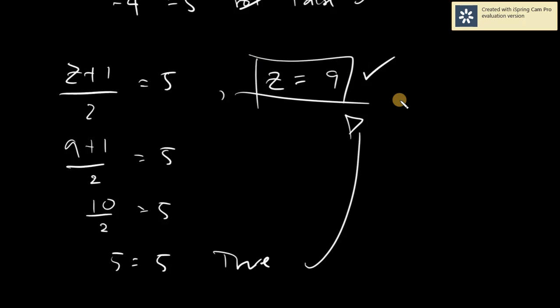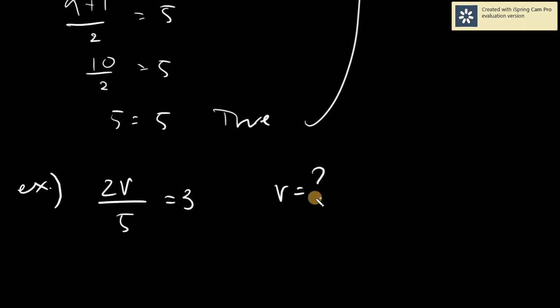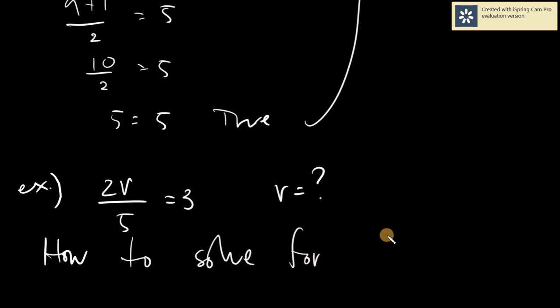Our aim for this one would be to find the solution — and the solution is not by guessing. What if our given is 2R over 5 equals 3? What should be the value of R? You are not allowed to guess — you must get it correctly the first time. That is what we will be learning in our next topic: how to solve for the solution.